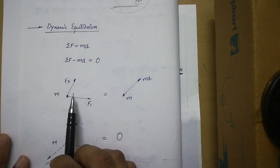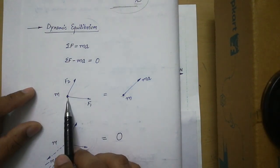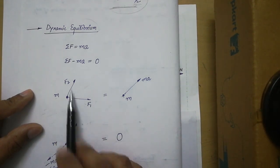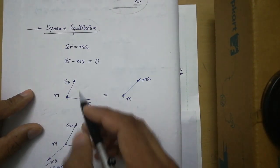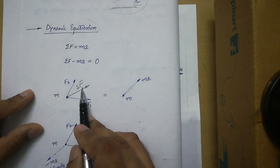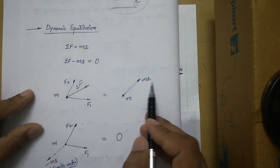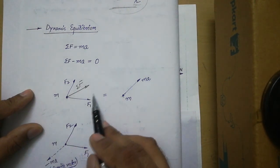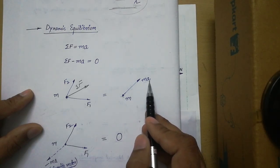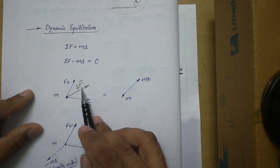Let me give you a brief recap of this concept. If we have a particle of mass M and we apply forces — say F1 and F2 — those forces have some resultant, which we call summation F. That resultant force is responsible for the acceleration of the mass, and the acceleration is along the direction of the resultant. This system is equivalent to the vector MA — the acceleration vector resulting from the resultant force.